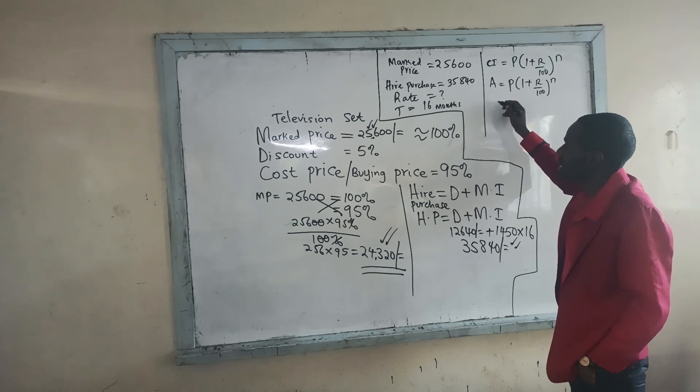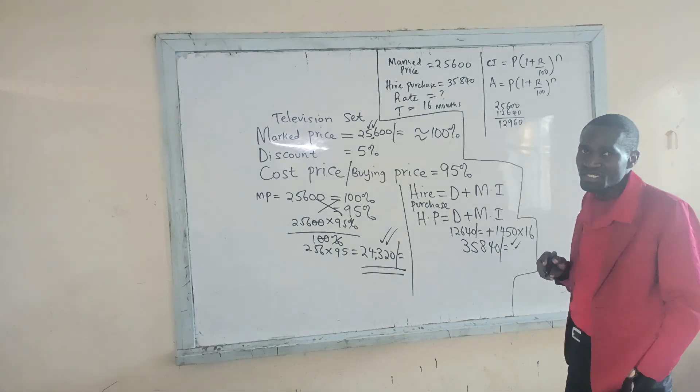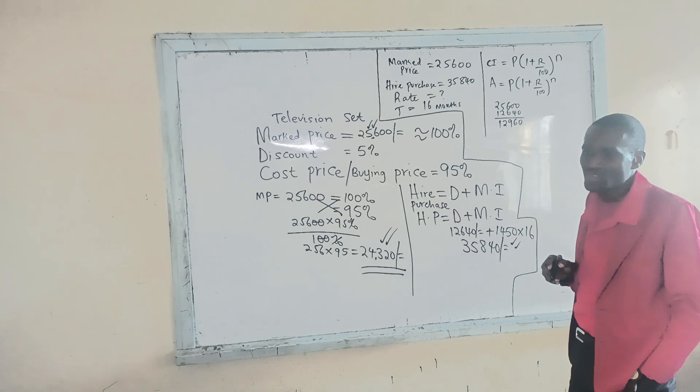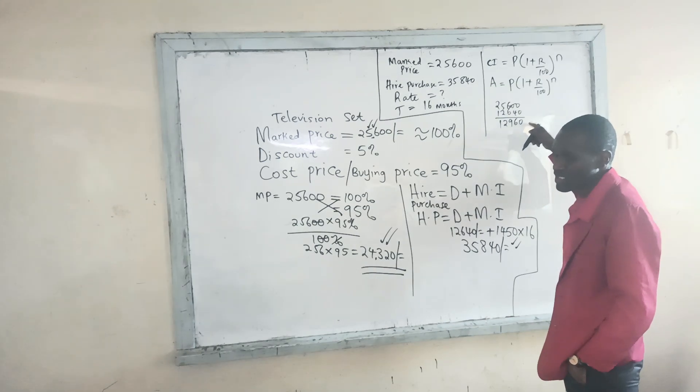So I am first able to pick 25,600, then I deduct whatever was paid as 12,640. So 12,960 was what was left in terms of what the person was supposed to actually clear to have that television set. So this is what earned interest. This becomes our principal.